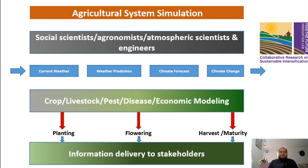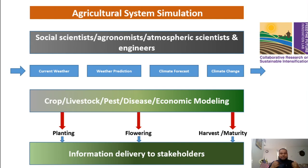When that information comes through the decision support system, policy makers and other stakeholders use those systems at different scales. From a farmer's perspective, adaptation to climate change is more closely related to addressing the risk associated with interannual variability within the season. When we talk about seasonal climate forecasts — that is, a couple of upcoming months — these forecasts have proven especially valuable in developing countries where agriculture is mostly rain-fed or technology is very limited.